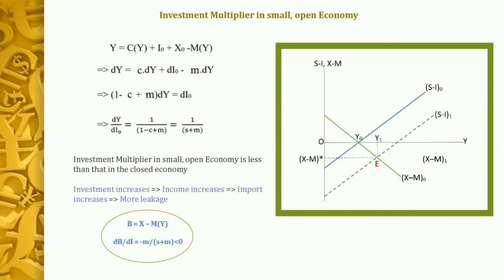The impact of investment change on the balance of trade, dB/dI, equals −m/(s + m), which is negative since m and s are both positive marginal propensities. This confirms that as investment increases, the balance of trade deteriorates. In the open economy context, the government may be skeptical about using investment-boosting policy given this adverse trade balance effect.